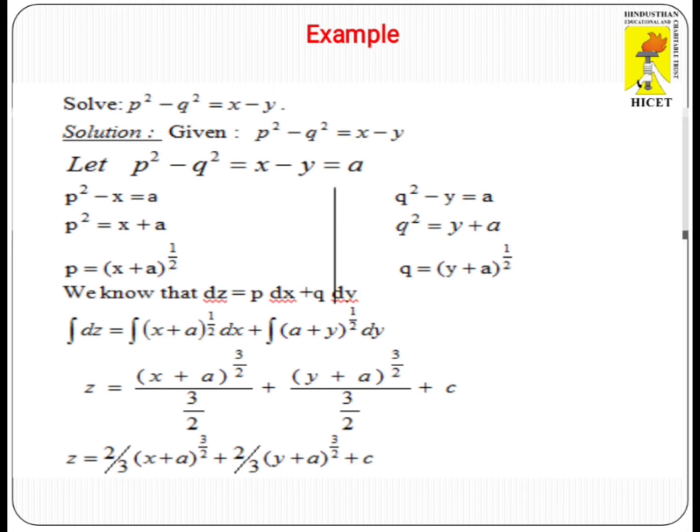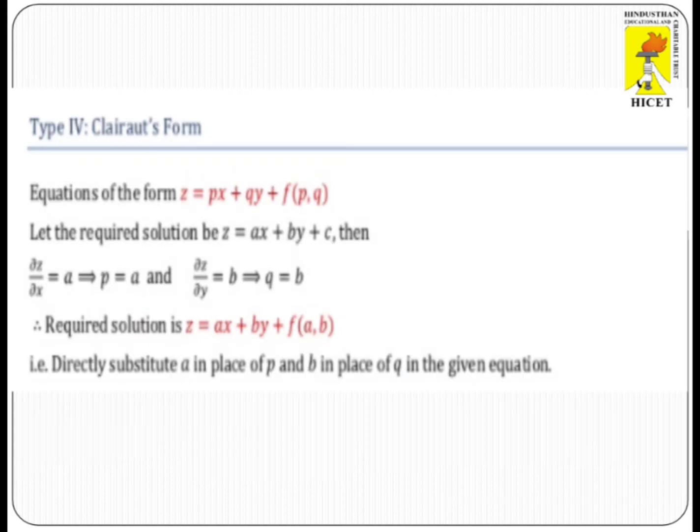Now using the total differentiation DZ = P·DX + Q·DY, we substitute P and Q and integrate to get Z equals (2/3)(X + A)^(3/2) + (2/3)(Y + A)^(3/2) + C, which is the complete integral of the given partial differential equation.